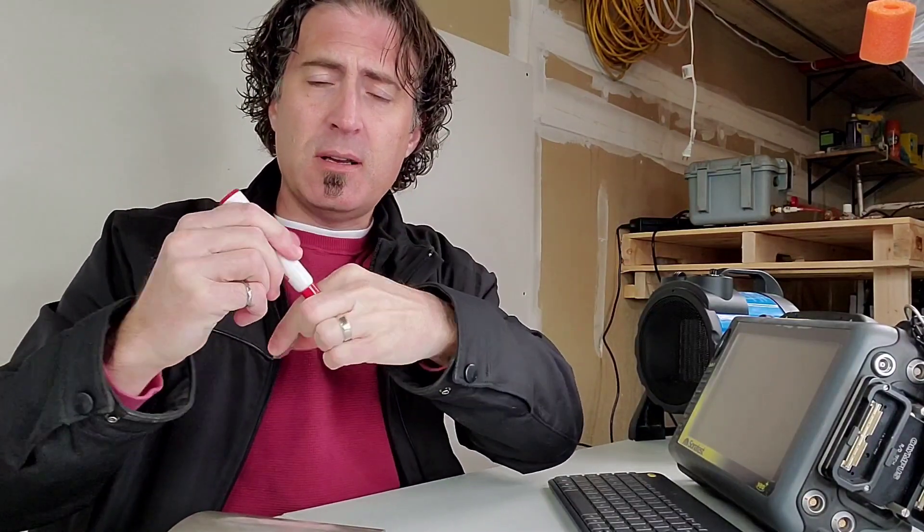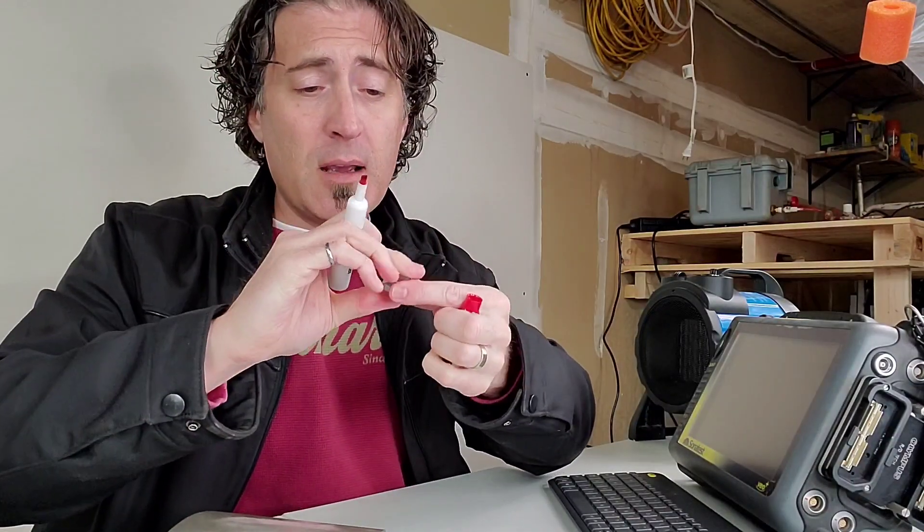You're going to take the wedge and a dry erase marker, whatever color you like from your kid's collection, and draw a line across the bottom of the wedge. Same with the other one.